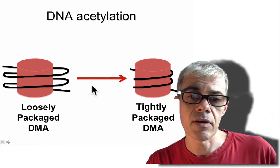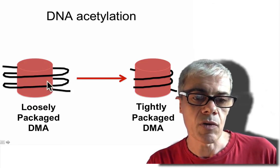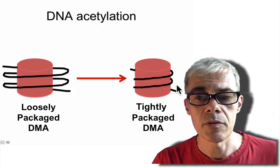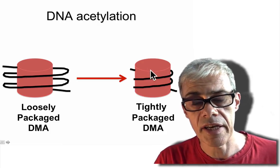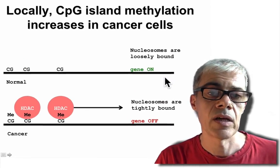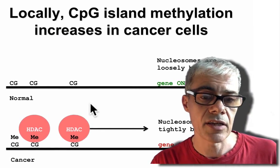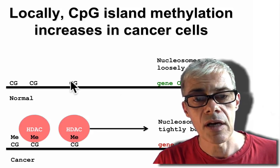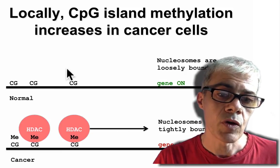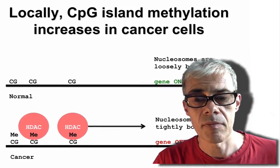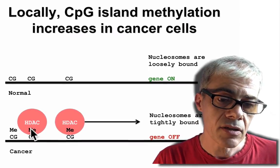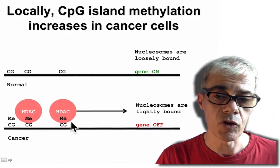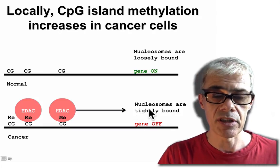What's happening in this diagram is that you go from a tumor suppressor gene being expressed in loosely packaged DNA to a tumor suppressor that can't be expressed because the DNA is tightly packaged. In normal cells, there's no methylation of these cytosines, so you have open DNA and gene expression. When methylation of these cytosines occurs, you get histone deacetylase binding, removal of acetyl groups, tightening of the DNA structure, and therefore the gene is turned off.